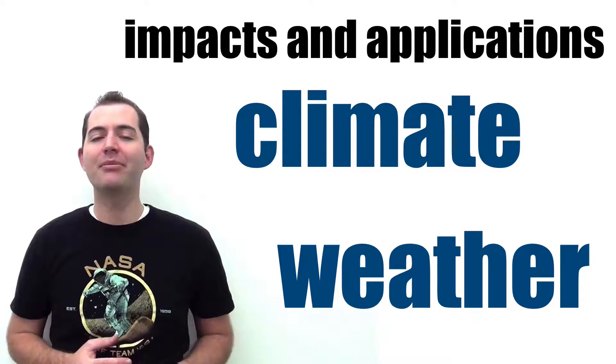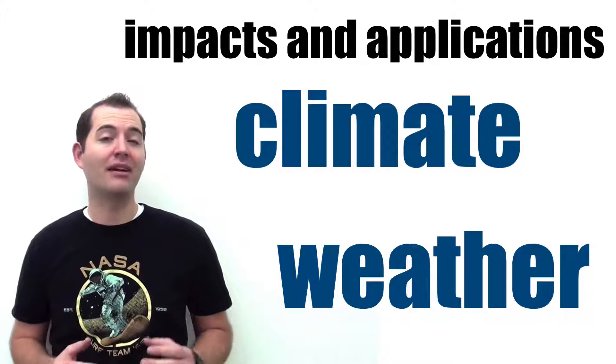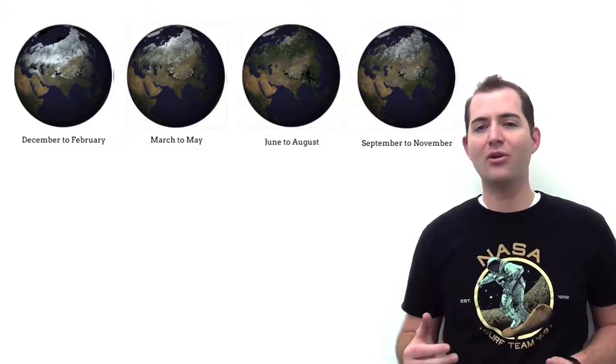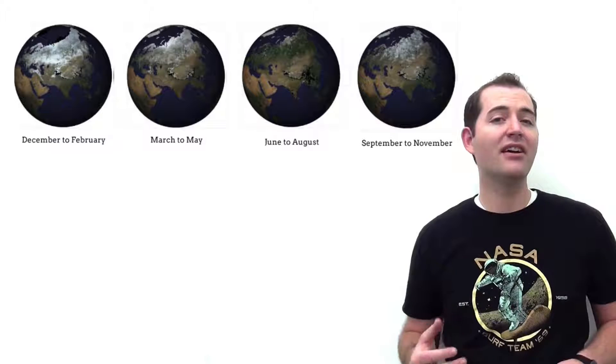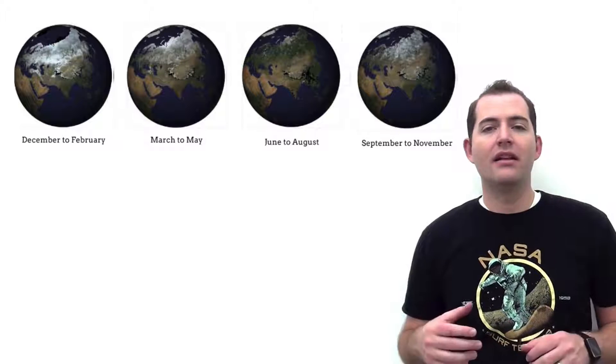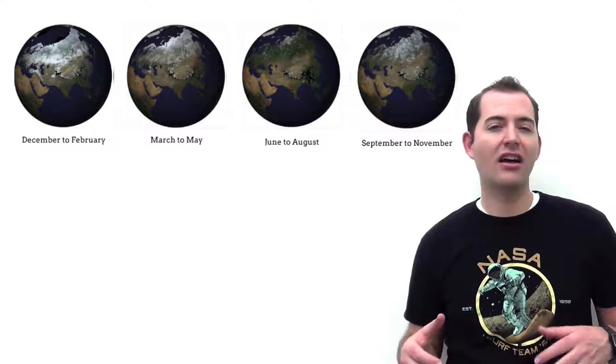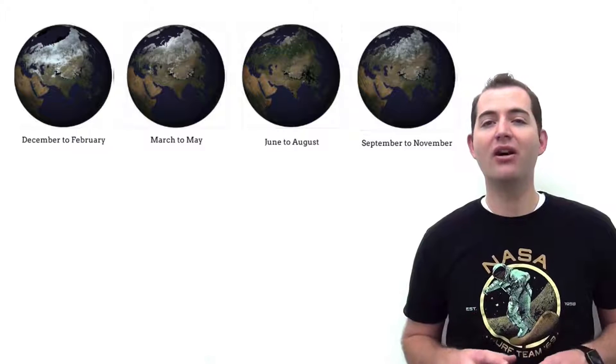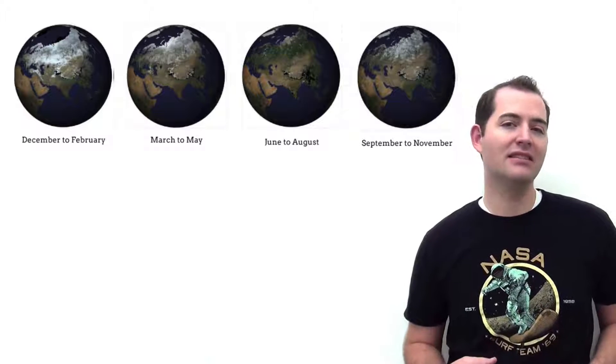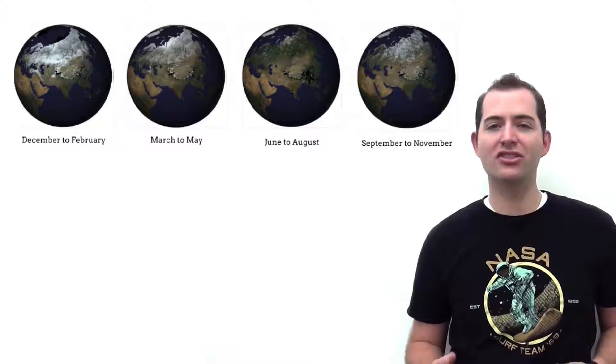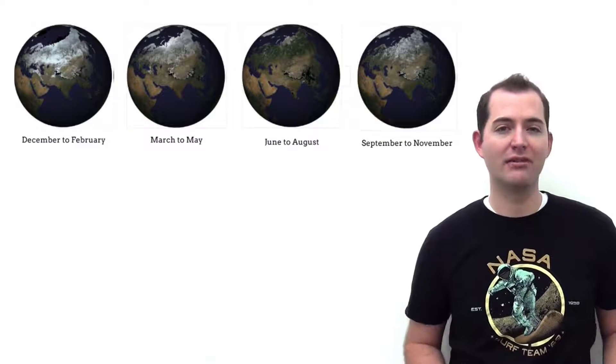Let's look at a couple examples of where albedo might impact weather and climate. The axis tilt of the earth and its orbit around the Sun causes variations in our seasons. The variations in the seasons cause changes in the albedo of a region throughout the year. This is because the seasons often cause changes in the ground cover of a region.